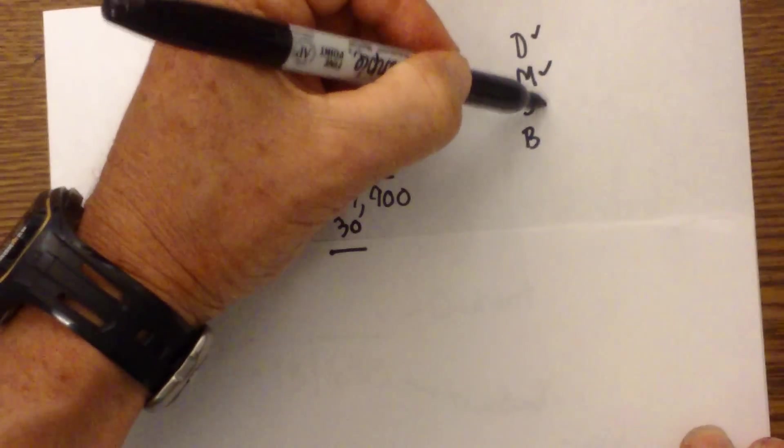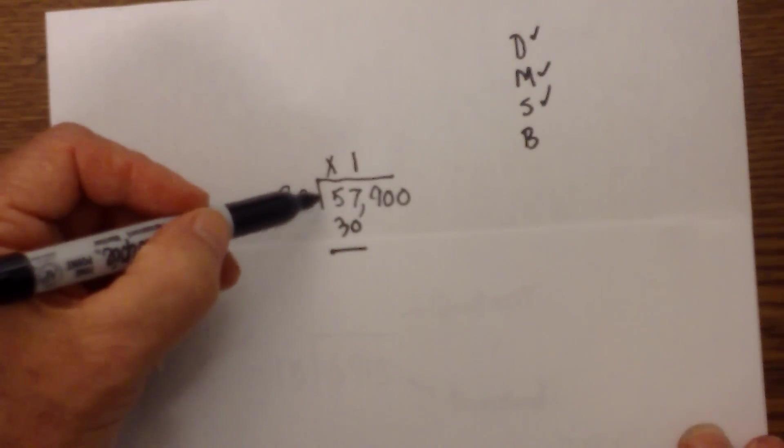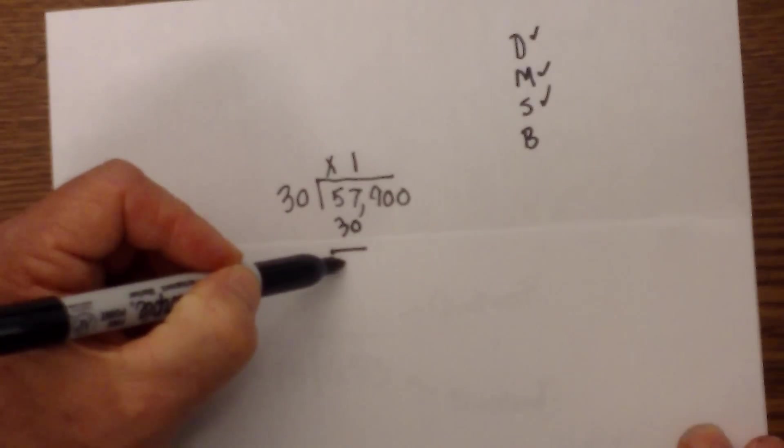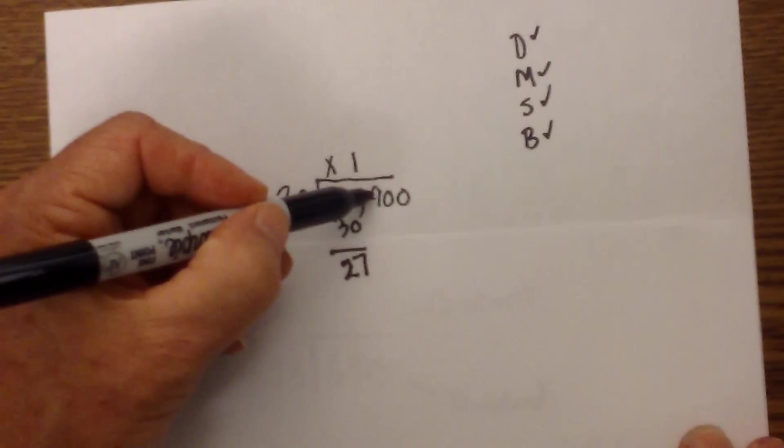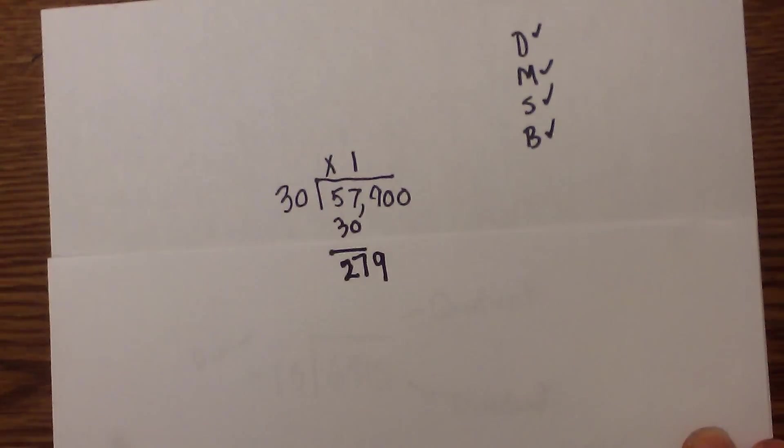We next subtract. 57 minus 30 is 27. Next we bring down the 9.